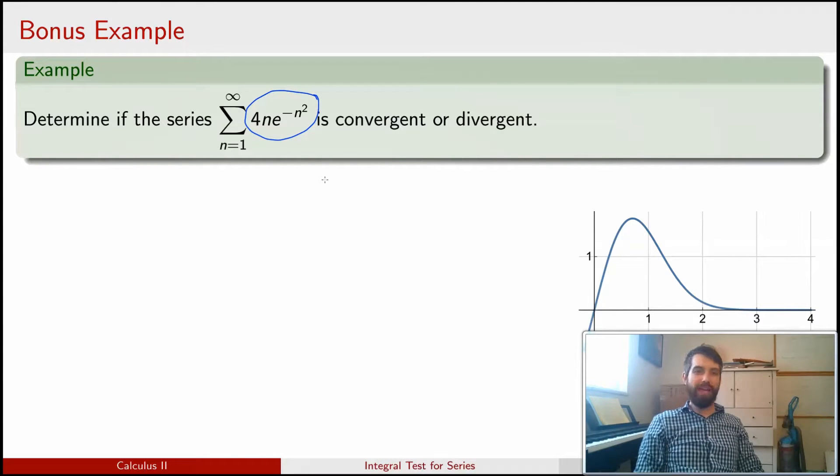If I tried to write out what Sn was, it would just be this horrible mess and we don't really know how to do anything with it. Indeed, that's pretty much often the case. In the telescoping series, we could write out Sn and everything cancelled and it was really neat, but in the vast majority of cases, if we try to write out what Sn was, it's just going to be this horrifying mess. So how do we deal with this?